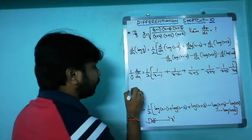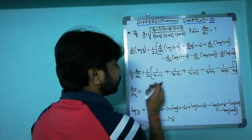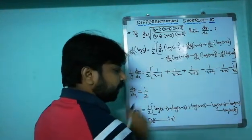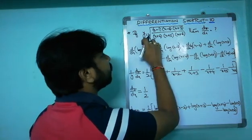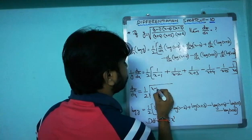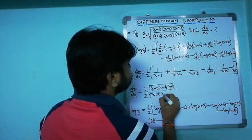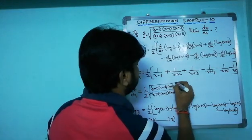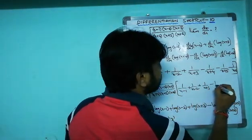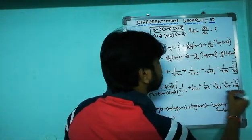To get dy/dx, multiply both sides by y. So dy/dx = (y/2) · [1/(x−1) + 1/(x−2) + 1/(x+3) − 1/(x+4) − 1/(x+5) − 1/(x+6)], where y = √[(x−1)(x−2)(x+3) / (x+4)(x+5)(x+6)]. That's the complete answer.